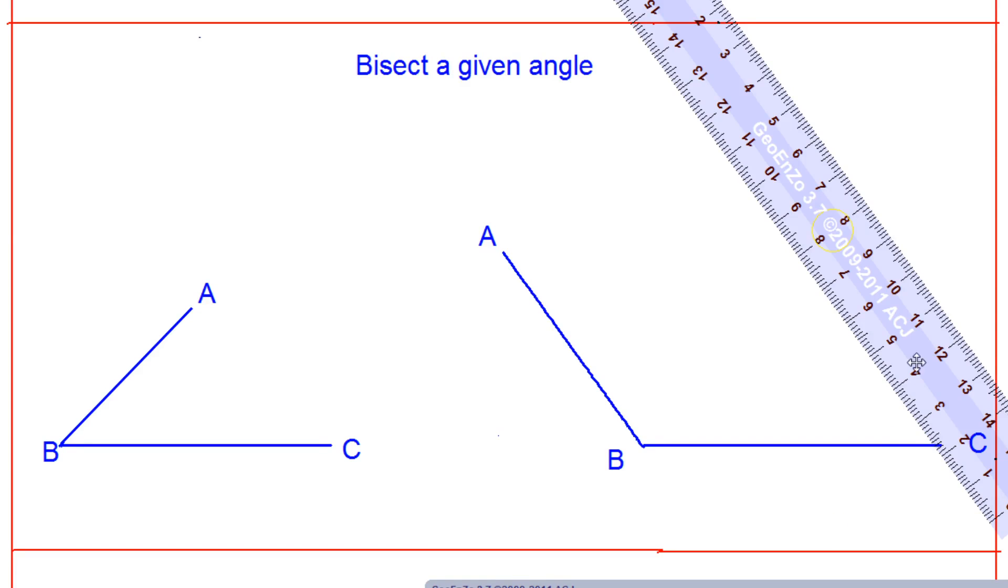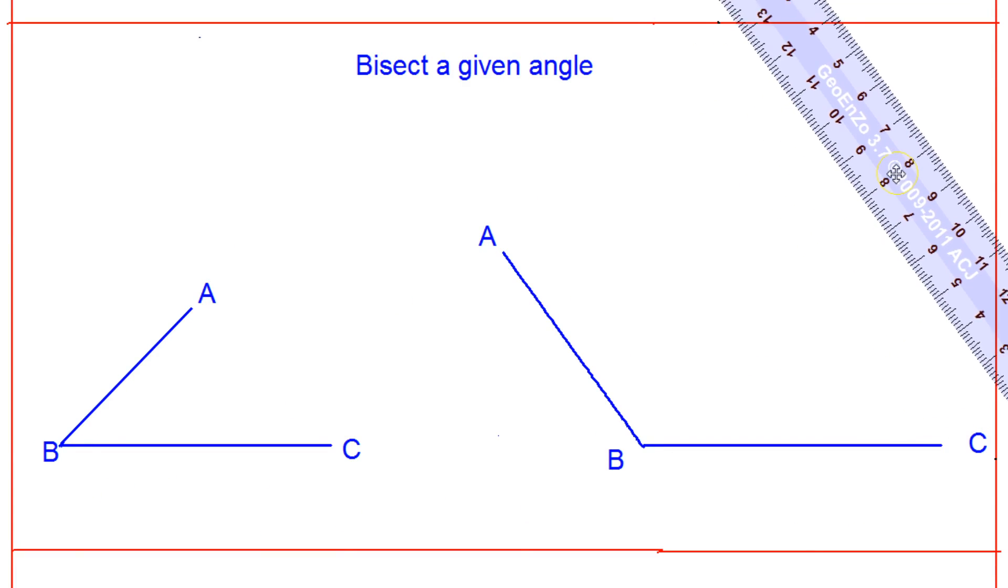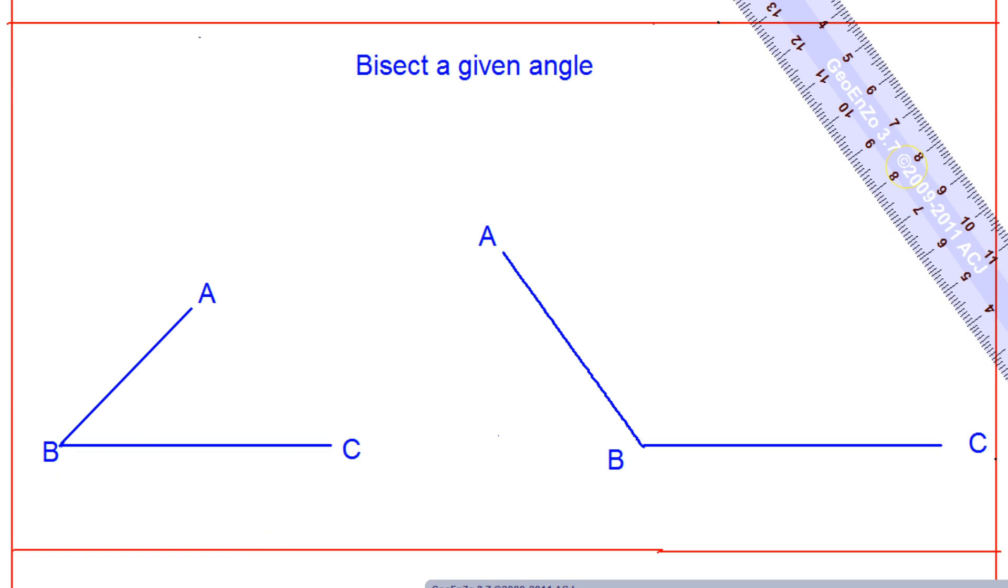In this lecture we want to bisect a given angle. Suppose we have a given angle ABC - it could be the first figure, or it could be in this way also, ABC the second one. To divide that, we need the help of the compass.